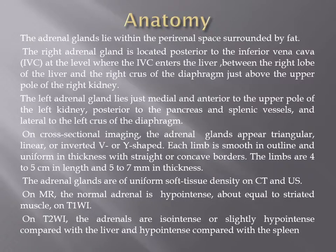Regarding anatomy, the adrenal gland is located within the perirenal space surrounded by fat. The right adrenal gland is located posterior to the inferior vena cava, between the right crus of the diaphragm and the right lobe of the liver. The left adrenal gland is medial and anterior to the upper pole of the left kidney, posterior to the pancreatic and splenic vessels.